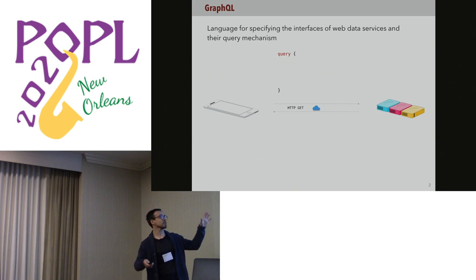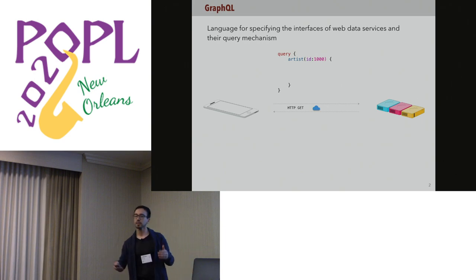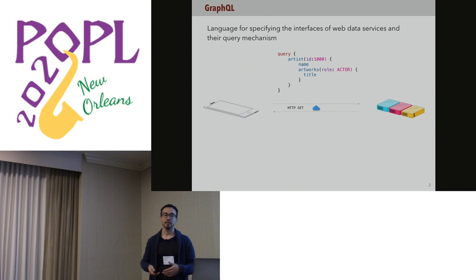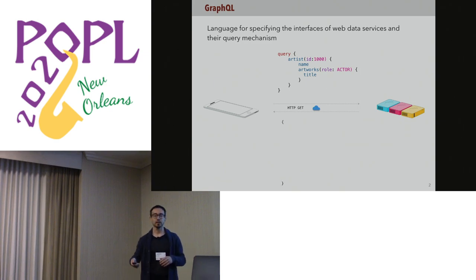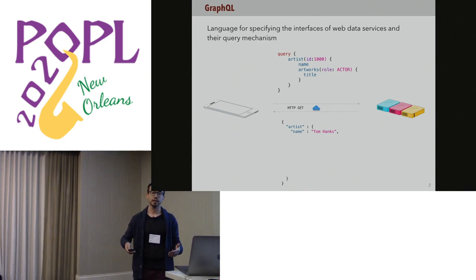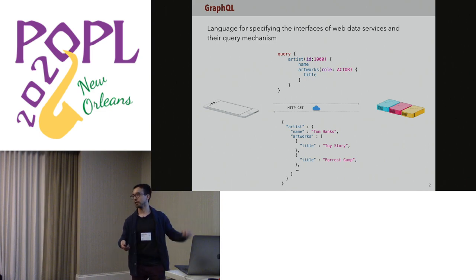A query in GraphQL looks like this. For instance, I want to get information about the artist whose ID is 1000. In particular, I want to get information about his name, and I want to know the artworks where he has participated as an actor, and in particular just the title of those artworks. This is sent to the server, and the server responds following the same structure — saying the artist is Tom Hanks, and this is the list of artworks: Toy Story, Forrest Gump, etc. This is the essence of a GraphQL query.